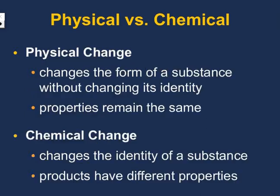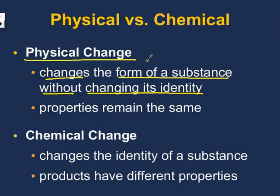So let's look at physical versus chemical changes. A physical change is changing the form of a substance without changing its identity. Put a star beside 'form,' because it's really just changing forms but not substances — just like we were talking about with ice. H2O is water whether it is in its solid, liquid, or gas form. A physical change does not change its identity, and the properties remain the same.